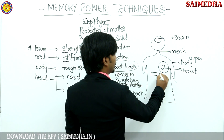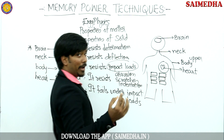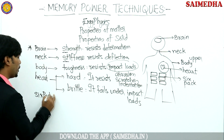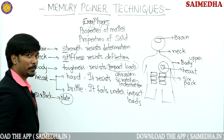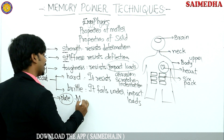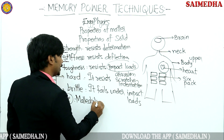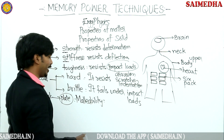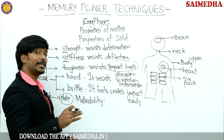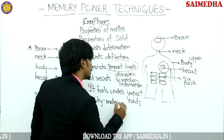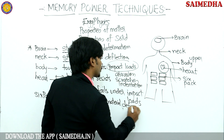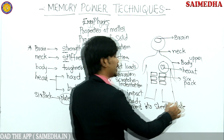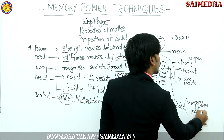Next, let us talk about the abs — the six-pack. You know, bodybuilders have six-pack abs. In terms of properties, remember the six-pack as plates — because this has appeared in the ESET examination question. The property is called malleability. Malleability is the property by which a soft material can be deformed into sheets or plates under the application of compressive loads.